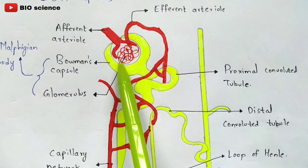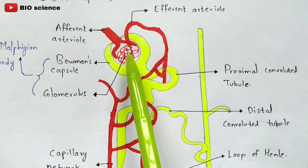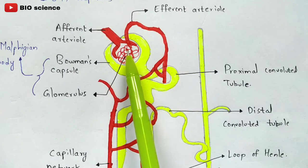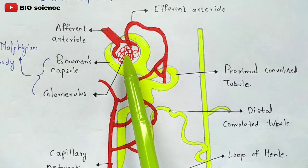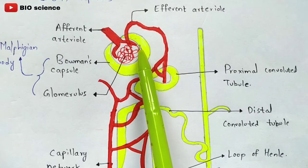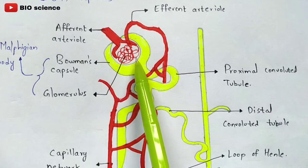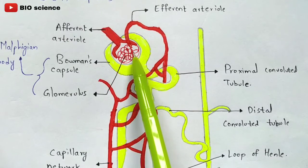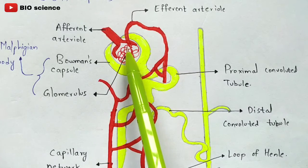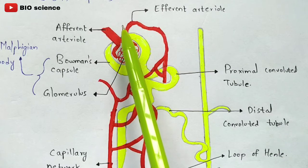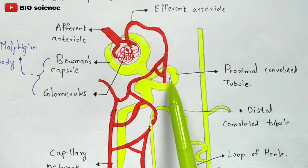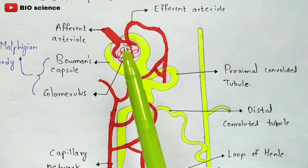Due to the narrowness of the efferent arteriole, pressure builds up inside the Bowman's capsule and the blood gets filtered. This particular type of filtration is called pressure filtration, and its other name is ultra filtration. After filtration, the remaining material enters the efferent arteriole and passes into the next part, which is the proximal convoluted tubule. This phenomenon is the first stage called glomerular filtration.